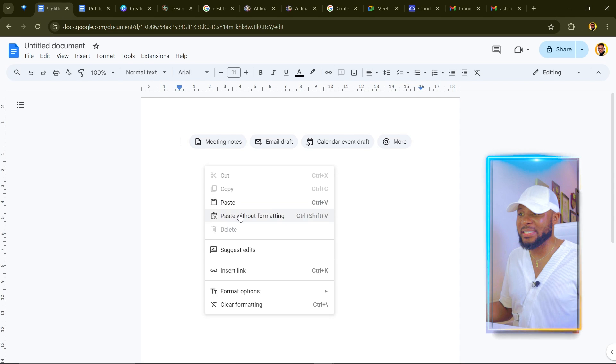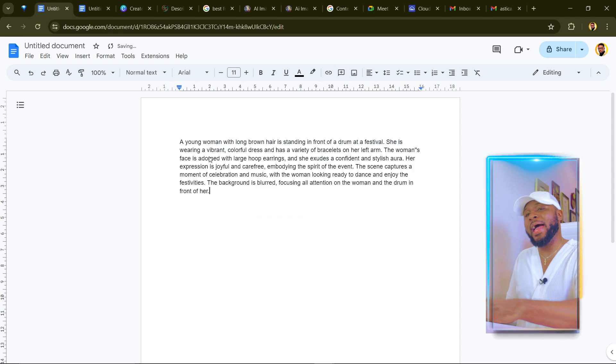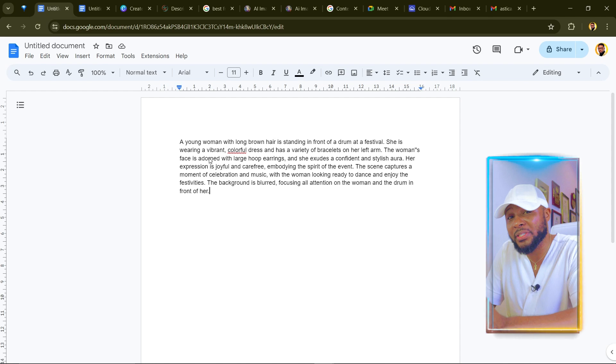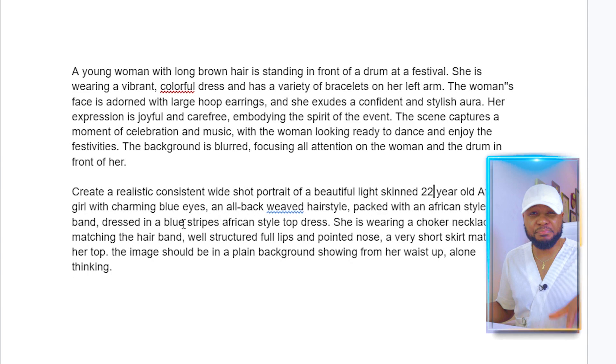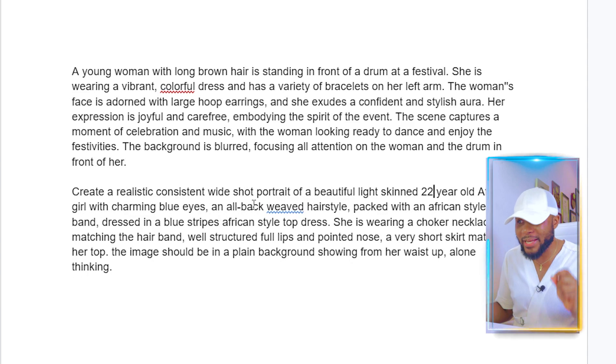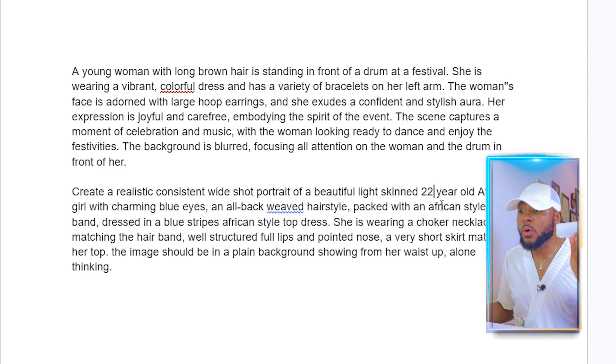So all we have to do now is copy this text, come over to Google Docs, and paste it here. Now we have that description. I'm going to use this to generate the base prompt — a few moments later — so now I've written the base prompt. You can see what I have here: 'Create a realistic, consistent, white short portrait of a beautiful, light-skinned, 22-year-old African girl with charming blue eyes and an all-black weaved hairstyle.' Don't worry about this prompt — towards the end of the video I'm going to be sharing how you can get it. This is one way to get a base prompt.